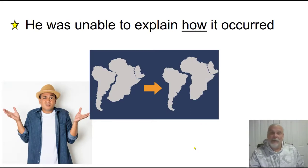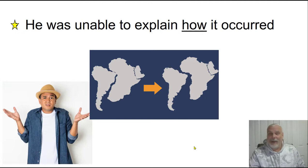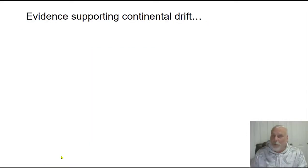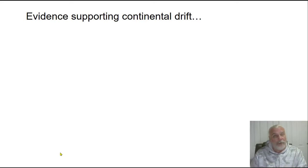He said that the continents moved, which is an idea, but he couldn't explain how that could occur. People were like, that can't happen — they're too big, they're not going to move. One thing I don't want you to think is that Wegener did not have evidence to support his theory — he did, he had plenty of evidence. The big reason people didn't go for his theory at the time is that he had no mechanism, no explanation of how the continents themselves could move.